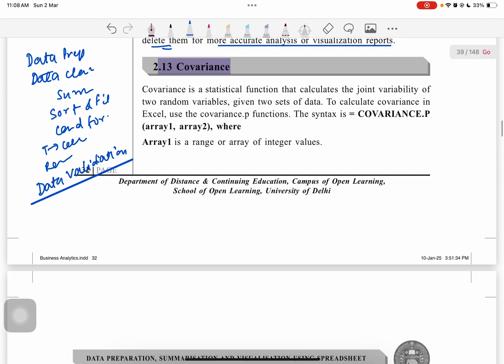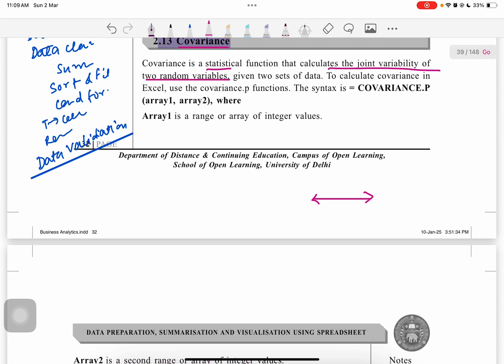In this video, we will cover covariance and correlation. Covariance is a statistical function that calculates the joint variability of two random variables given two data sets. In simple words, covariance describes the joint variability, meaning the relation or impact of one variable on the other. For example, if I use more social media, then my scores would decline.